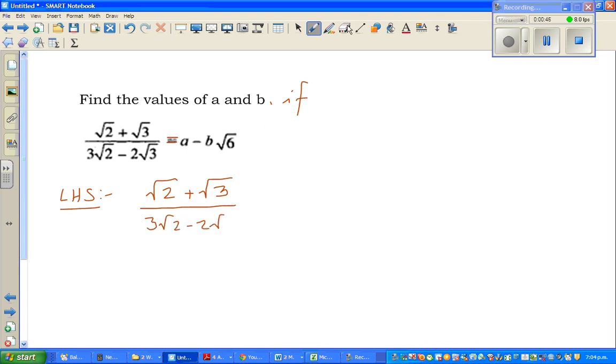Now, whenever you want to simplify a surd form, you have to rationalize the denominator. Now, how do you do that? To rationalize the denominator, that means you want a neat number in the denominator.